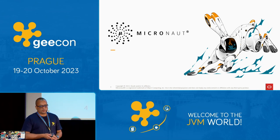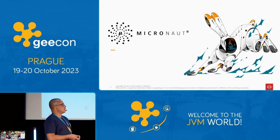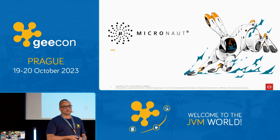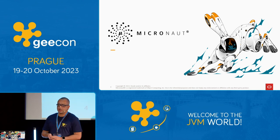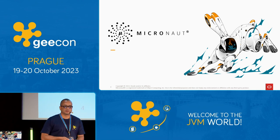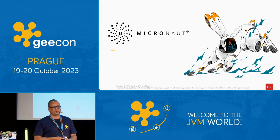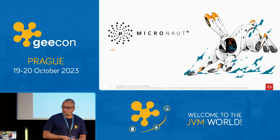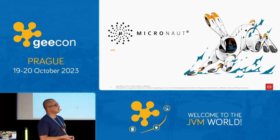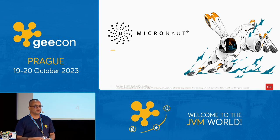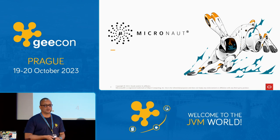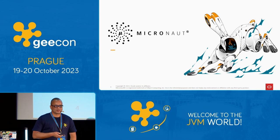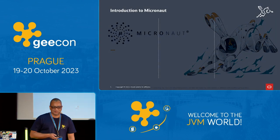Let's talk about Micronaut. As you may have heard, it's one of the top four frameworks for enterprise Java development, cloud-native, along with Spring Boot, Helidon, and Quarkus. I know that Red Hat has a massive operation here in the Czech Republic, and there are some comparisons, but please — no flame discussions. That's a joke.